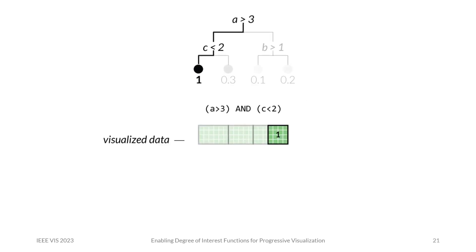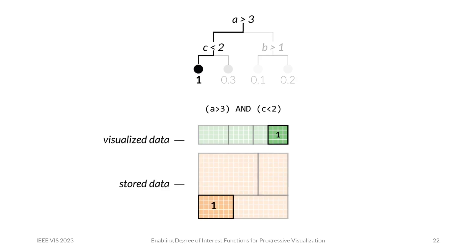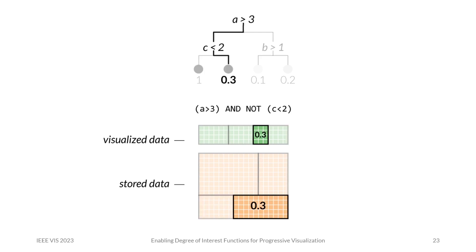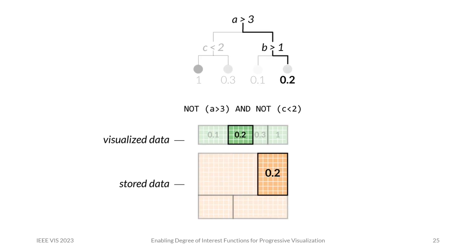The great thing about regression trees is that we can flip this around. Rather than determining the interest of a particular item, we can also ask which items have a particular predicted interest. To do this, we take the decision rules that lead to a particular leaf node — for example, we get the partition our model predicts to be of high interest. We can use these rules not only on visualized data, but also on data not yet visualized. We transform the decision rules into a boolean filter to adjust the query we use on our database.